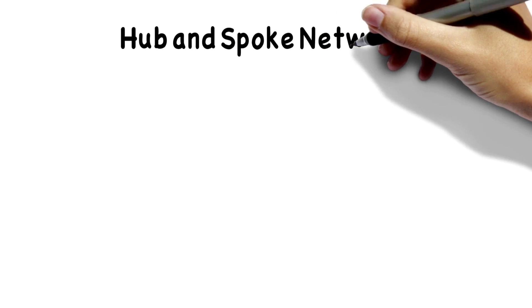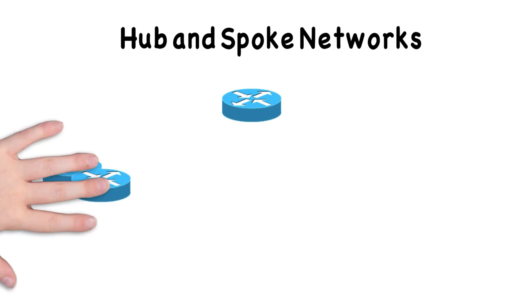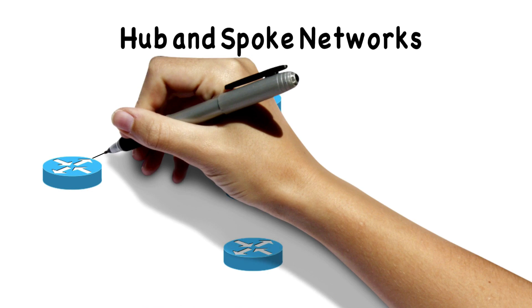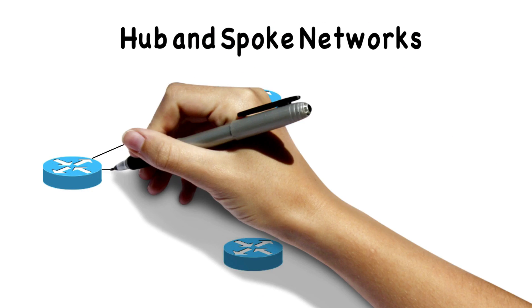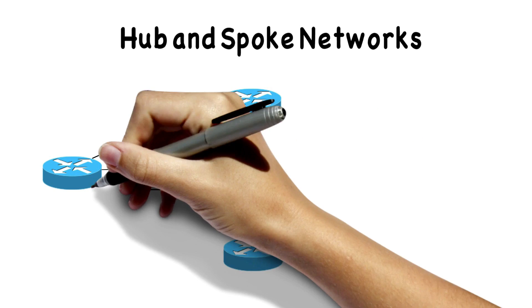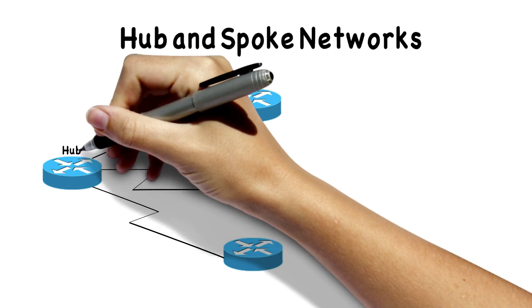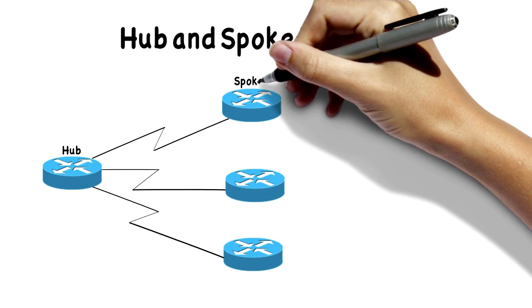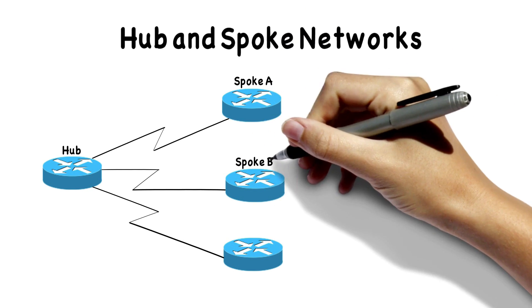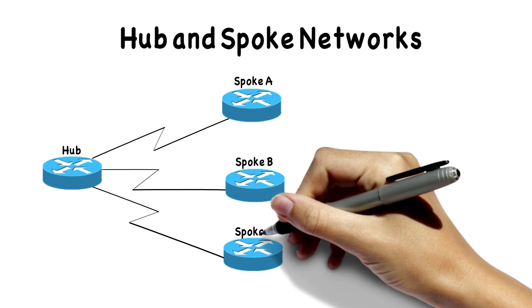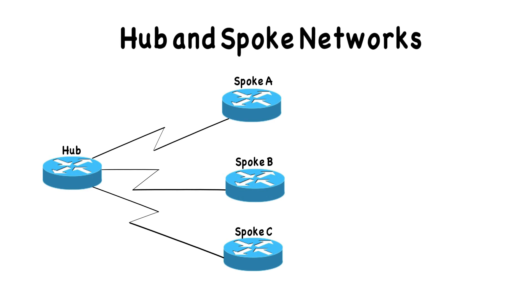Another wide area network type we have is a hub and spoke network. You might remember earlier in your studies we talked about different types of topologies, including a star topology where we had an Ethernet switch at the center of that star, with devices like PCs, printers, IP phones, and wireless access points connecting back to it. In the WAN world, this is called a hub and spoke topology — the center of the star is the hub, and we've got spokes that radiate out from that hub.